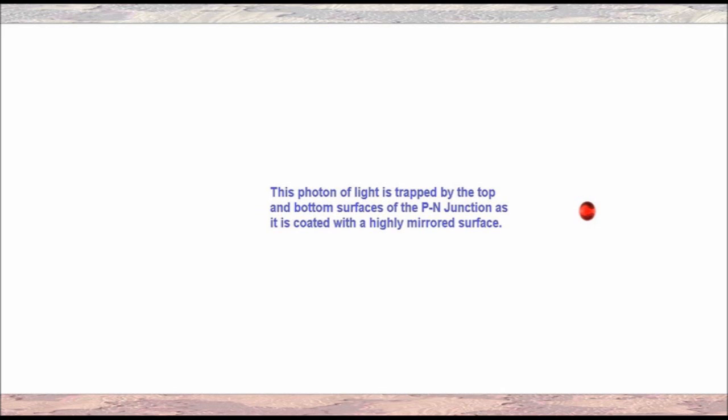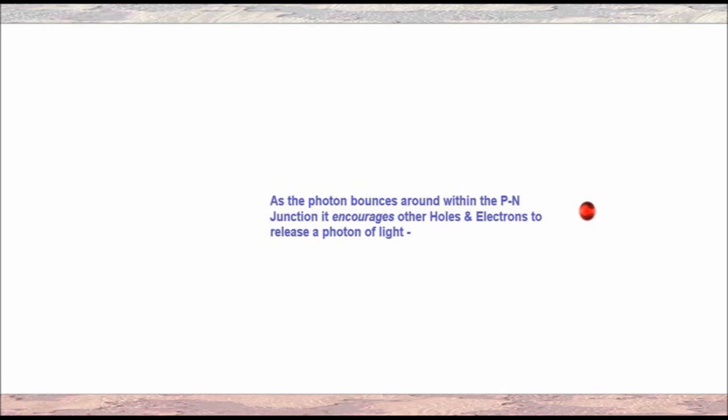This photon of light is trapped by the top and bottom surfaces of the P-N junction as it is coated with a highly mirrored surface. As the photon bounces around within the P-N junction, it encourages other holes and electrons to release photons of light.